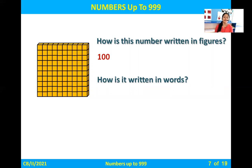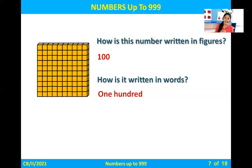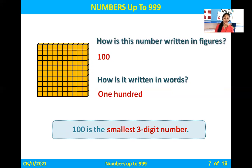How is it written in words — the spelling of one hundred? Spelling of one: O-N-E. One hundred: H-U-N-D-R-E-D. You can write as per the sound. One hundred is the smallest three-digit number.